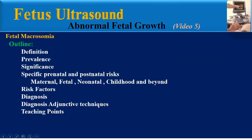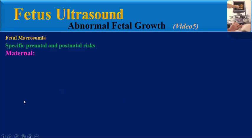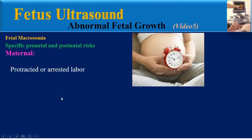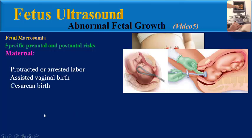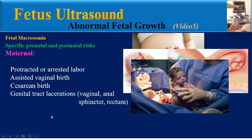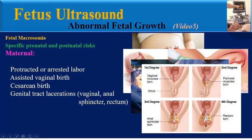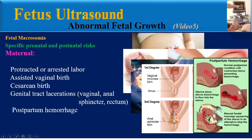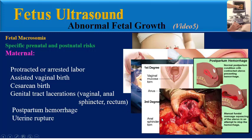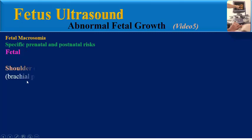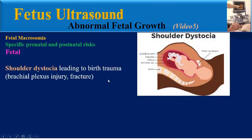Specific prenatal and postnatal risks: Maternal risks include protracted or arrested labor, assisted vaginal births, caesarean delivery, genital tract laceration including vaginal, anal, sphincter and rectal lacerations, postpartum hemorrhage, and uterine rupture. Fetal risks include shoulder dystocia leading to birth trauma, asphyxia, and stillbirth especially in fetuses more than 5,000 grams.